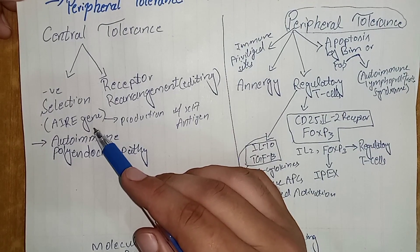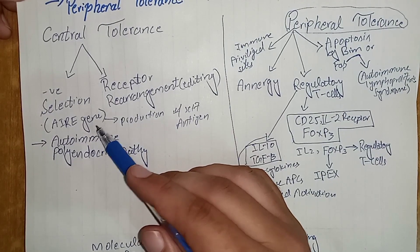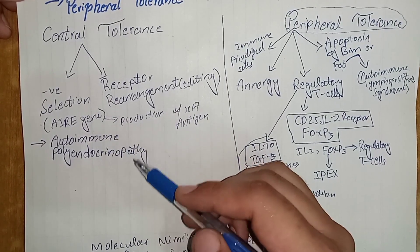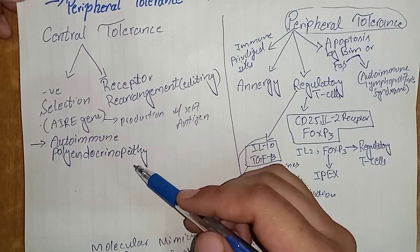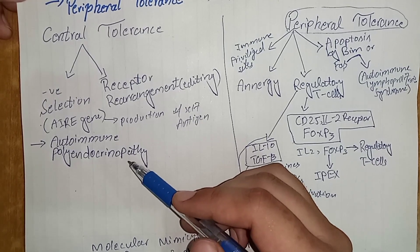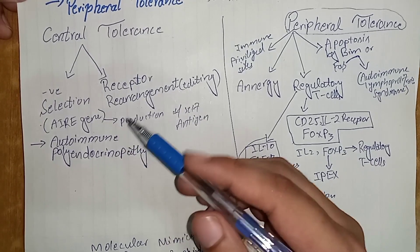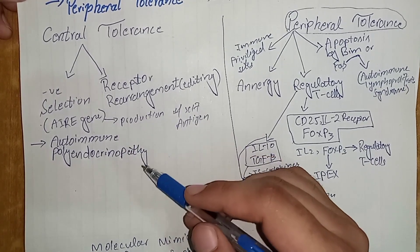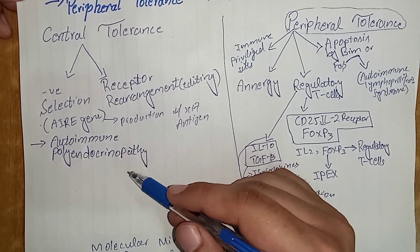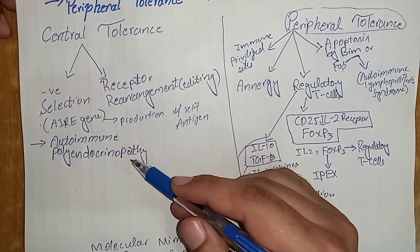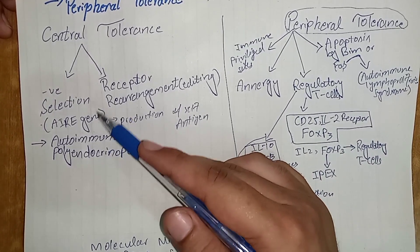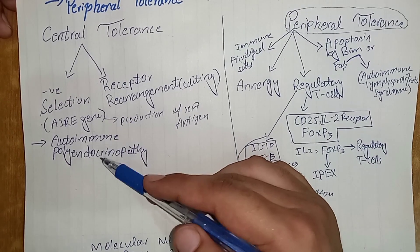If there is a mutation in the AIRE gene, it can lead to autoimmune polyendocrinopathy, which can cause multiple autoimmune manifestations and tissue damage. This was the central tolerance mechanism for T lymphocytes.